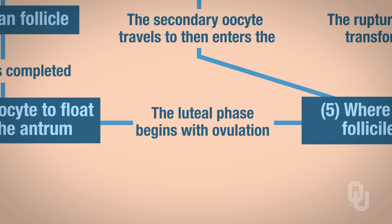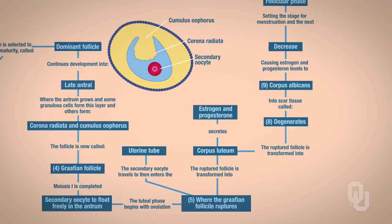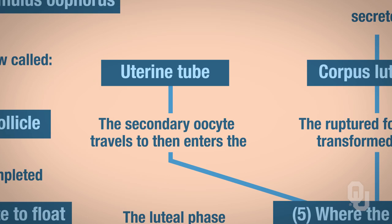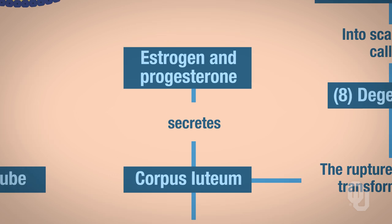Now we're starting the luteal phase — the last phase of the ovarian cycle. The Graafian follicle ruptures; you can see in the diagram how the follicle is rupturing. Here's our secondary oocyte, and here's what's left over of the follicle. When it ruptures, the secondary oocyte enters the uterine tube — remember, it's always the secondary oocyte that enters the uterine tube. The rest of the follicle gets transformed into what's called the corpus luteum. That corpus luteum is going to secrete estrogen and progesterone — always keep in mind, the corpus luteum secretes estrogen and progesterone.